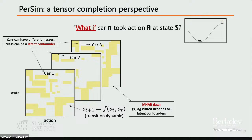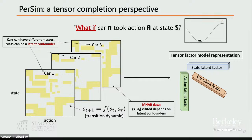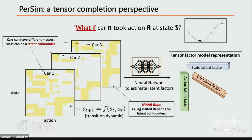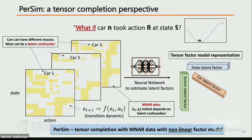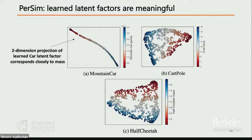Because cars have different masses, any policy will observe different things based on the latent confounder — the mass. So you have MNAR data where the visited state-actions and the resulting next states are functions of the latent mass. Using a low-rank tensor factor model — with factors for action, car, and state — and a neural network to learn low-dimensional latent factors, our method Persim learns latent factors that are quite meaningful. For mountain car, the learned 2D latent factor for each car corresponds well to the true gravity/mass. Similar results hold for the half-cheetah environment.